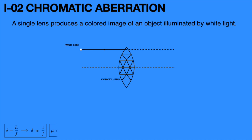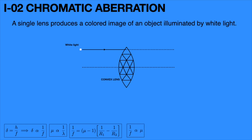We know that mu is proportional to 1 by lambda, where mu is the refractive index and lambda is the wavelength of light. From the lens maker's formula, 1 by f equals mu minus 1 times (1 by r1 minus 1 by r2), where r1 and r2 are the radii of the lens and are constant. Hence, 1 by f is proportional to mu. From the preceding equations, delta is proportional to 1 by lambda. Since the wavelength of red light is greater than violet light, the deviation produced by red light is lesser than that of violet light.